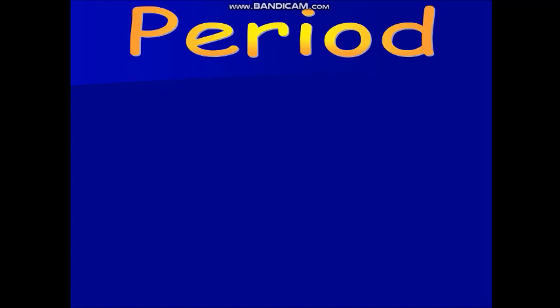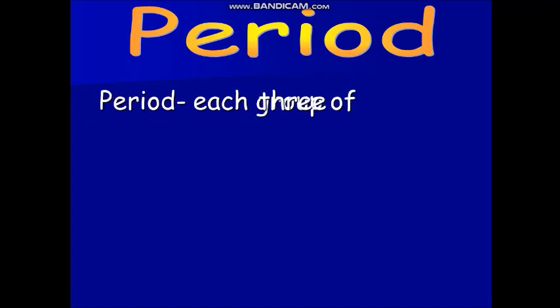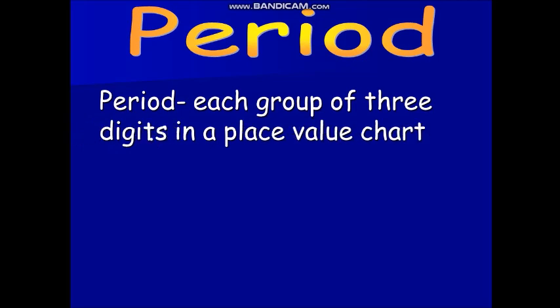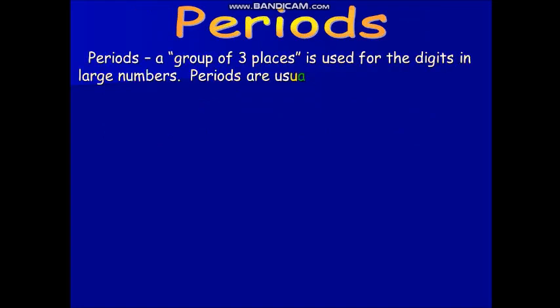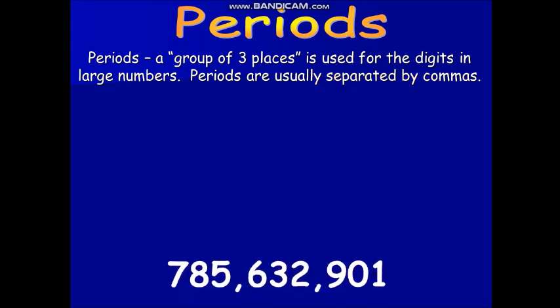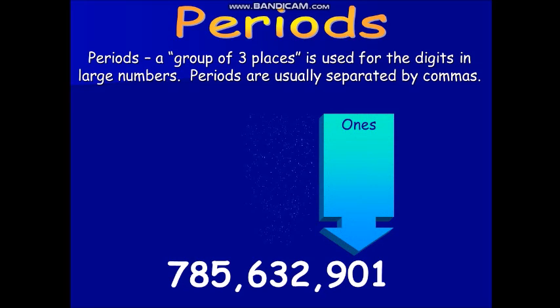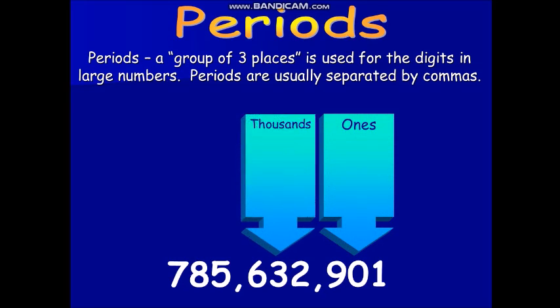Let's move on to periods. A period serves like a grouping of numbers so we can easily read and tell its value. Each group consists of three digits and are usually separated by commas. We have the ones, thousands, and millions.